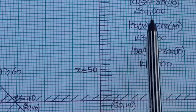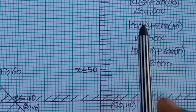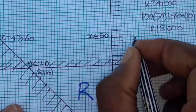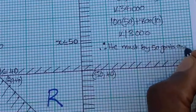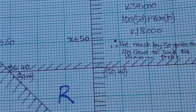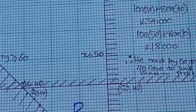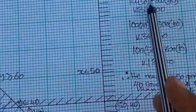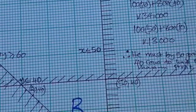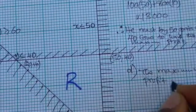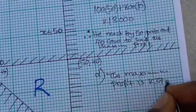Comparing the three results — 37,000, 34,000, and 13,000 kwacha — the highest is 37,000 kwacha, achieved when there are 50 goats and 40 cows. Therefore, he must buy 50 goats and 40 cows to make the maximum profit. For Part D, the maximum profit is 37,000 kwacha.